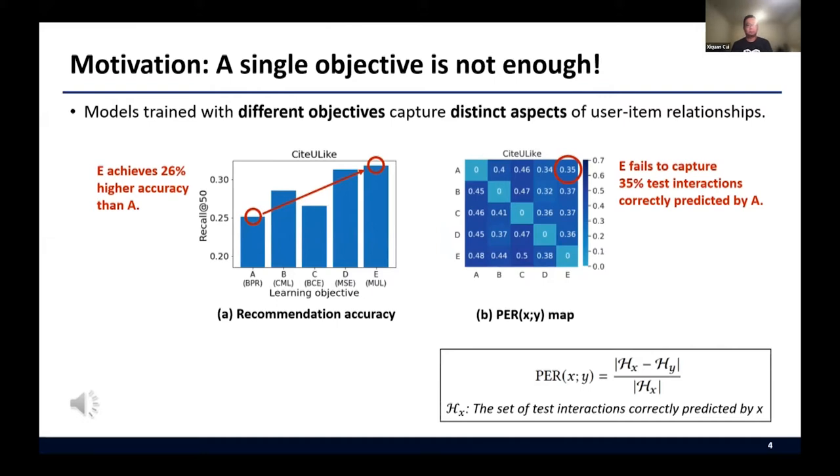However, from the right figure, which summarizes PER values, we can see that E fails to capture 35% test interactions correctly captured by A. In other words, the user's preferences correctly predicted by each model are significantly different, regardless of their quantitative recommendation performance. This analysis clearly shows that a single objective is not enough to achieve satisfactory performance. And this analysis also lead us to exploit the complementary knowledge for training a model to have a more complete understanding of user-item relationships.